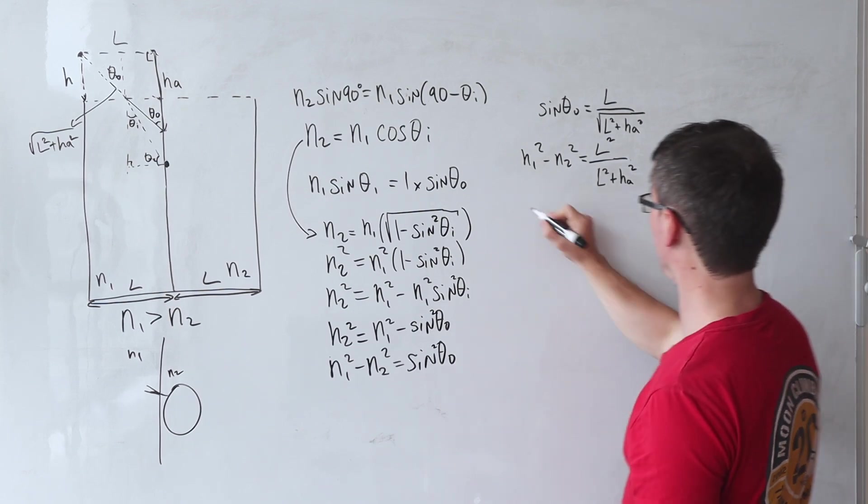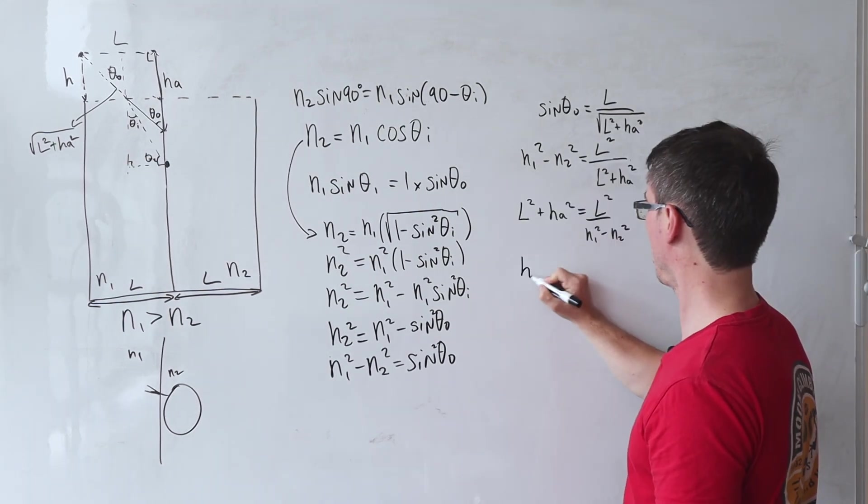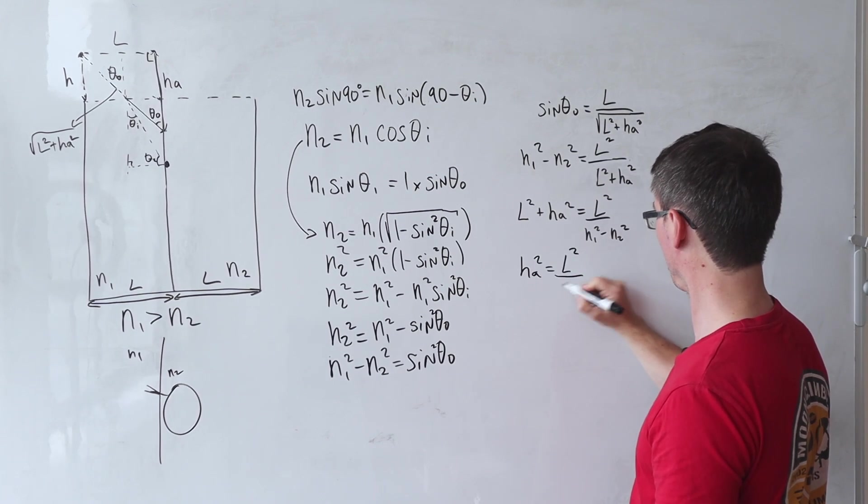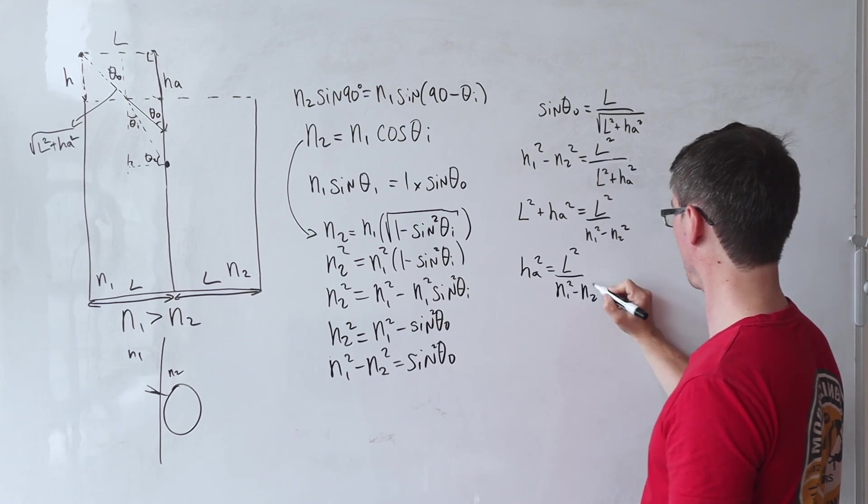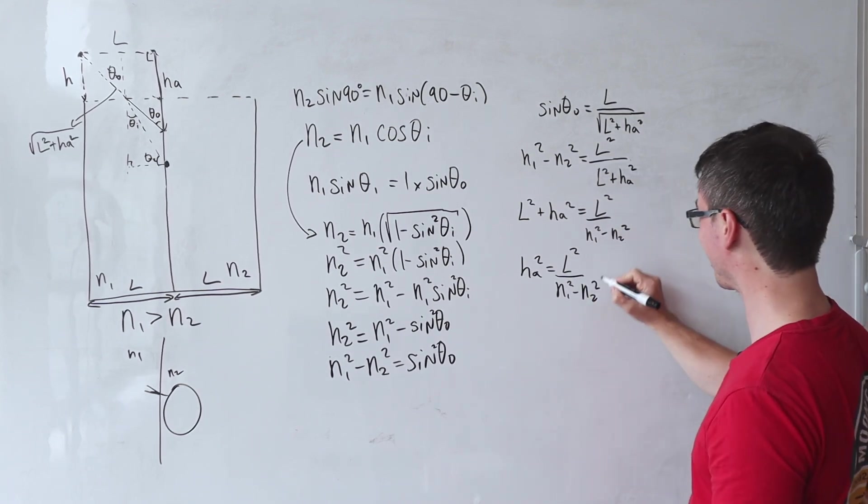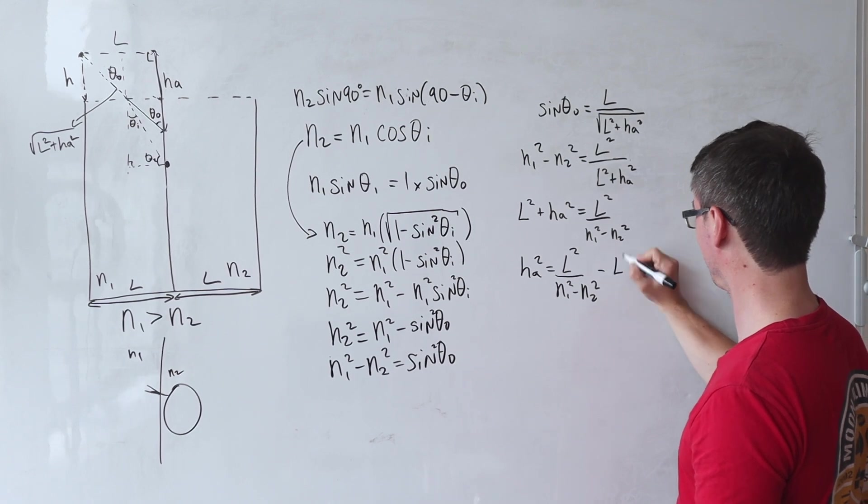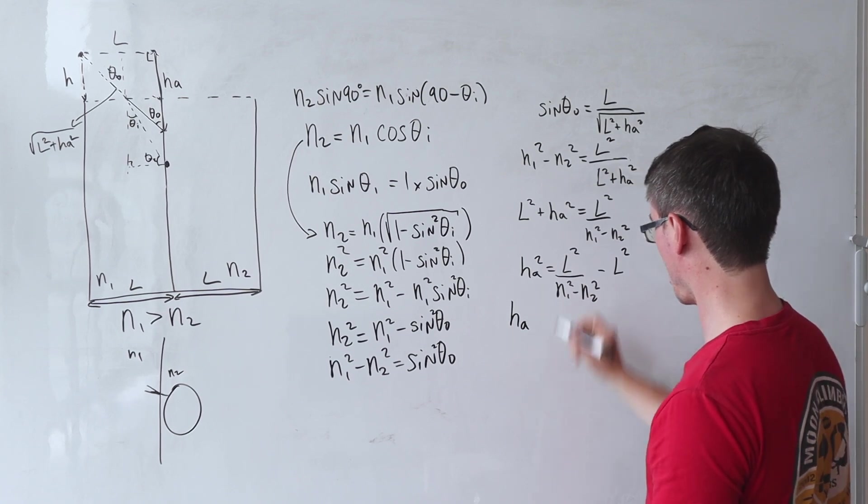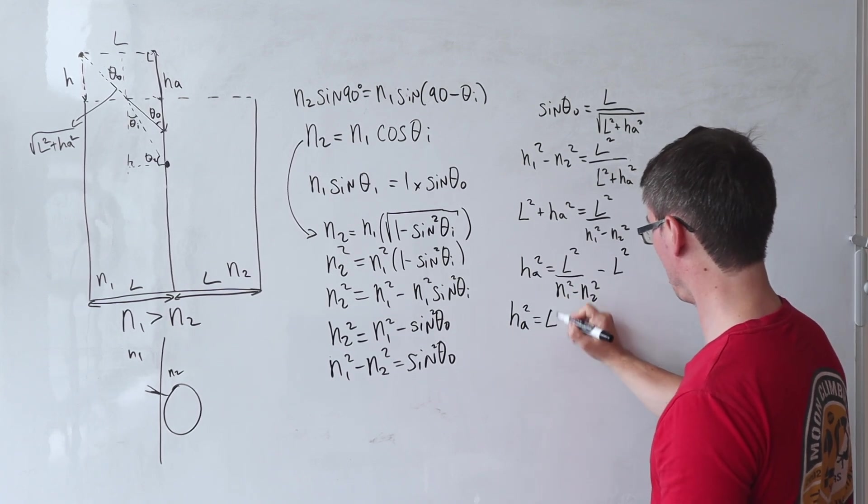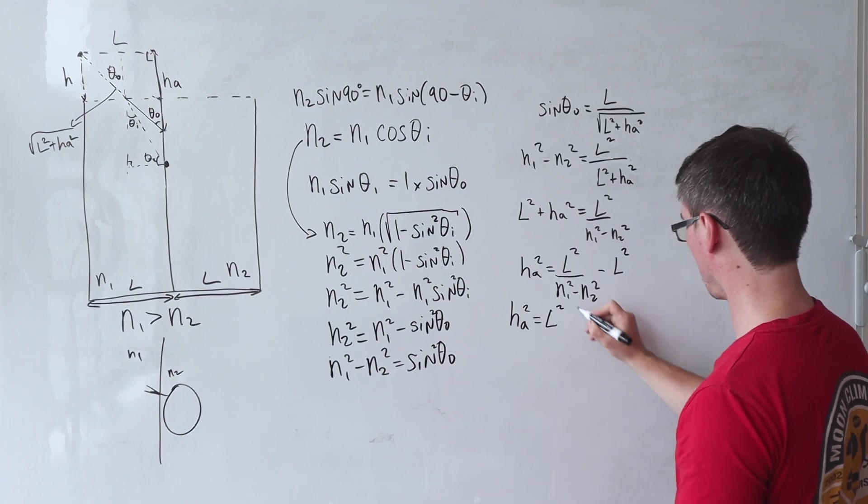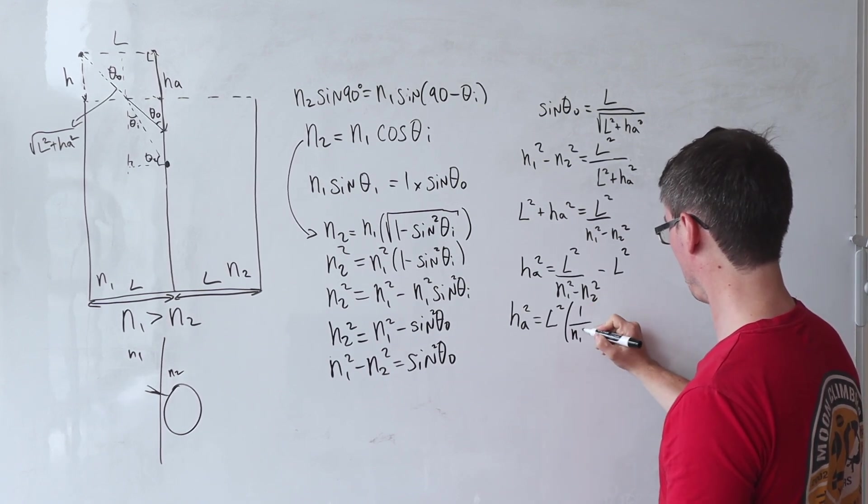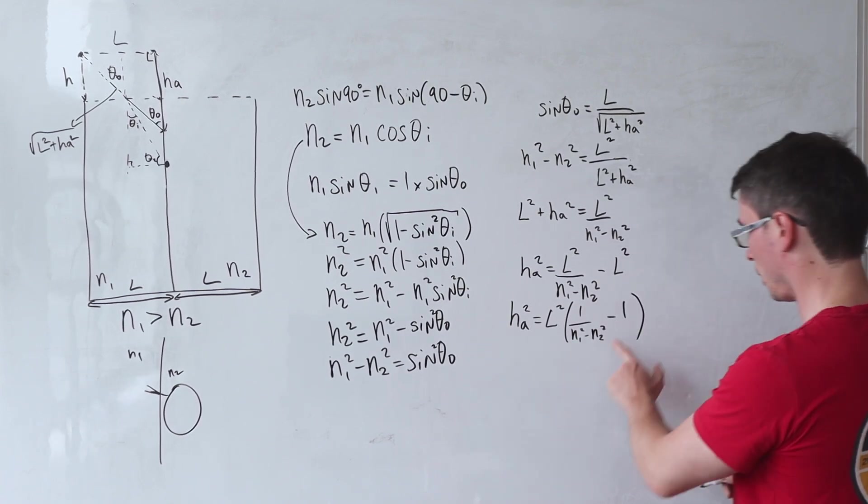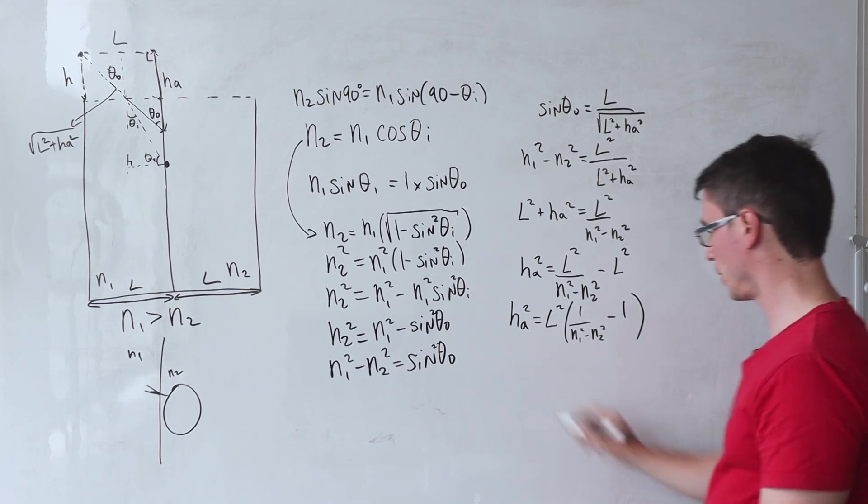What we want to really do is just rearrange for HA squared. So HA squared is then going to be L squared over N1 squared divided by N2, take away N2 squared, and then let's take away L squared again. So this means that HA squared will be... Let's take L squared in brackets. We get 1 over N1 squared, take away N2 squared, take away 1.